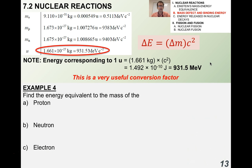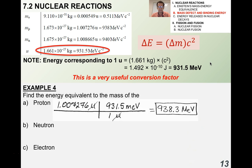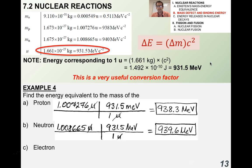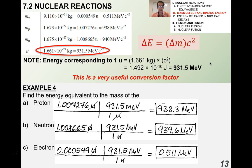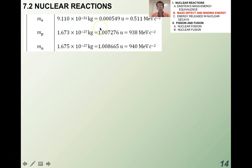As an example, go ahead and find the energy equivalent to the mass of protons, neutrons, and electrons. Pause the video and try this. A proton is 938 MeV, a neutron is 939 MeV, and an electron is 0.511 MeV. We're just verifying those values from the data booklet.